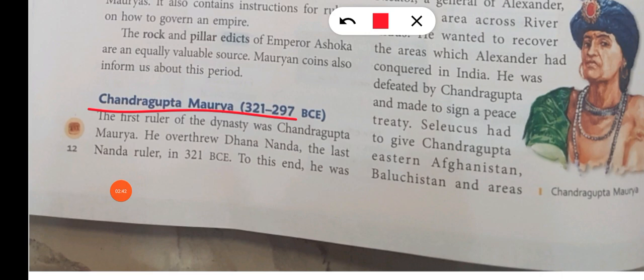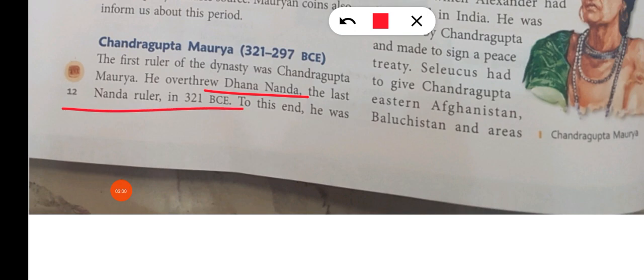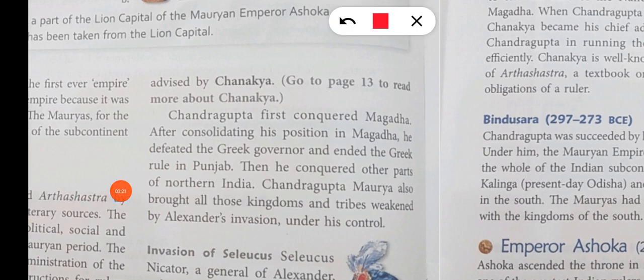Chandragupta Maurya was the first ruler of the dynasty. Chandragupta Maurya established the Mauryan dynasty in 321 BCE. He overthrew Dhanananda, the last Nanda ruler. Chandragupta Maurya was advised and counseled throughout this entire process by Chanakya.